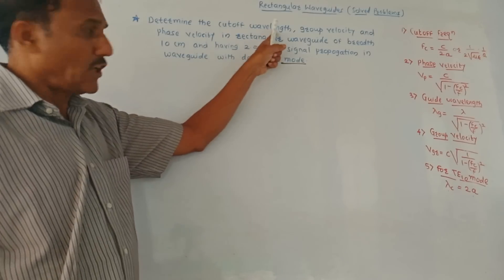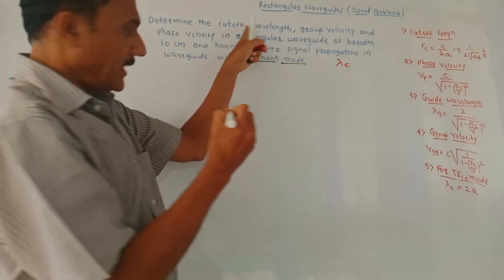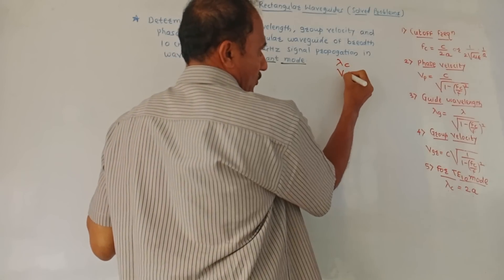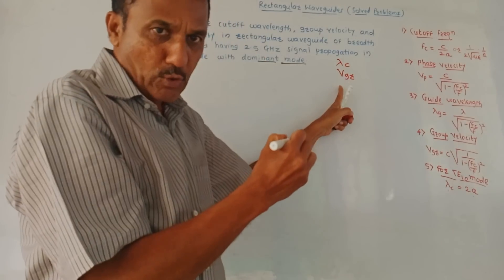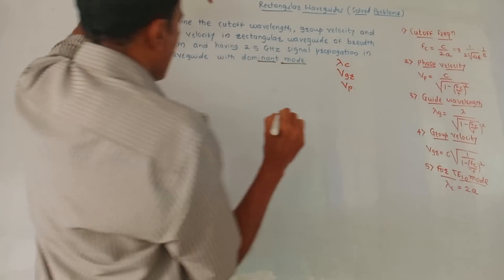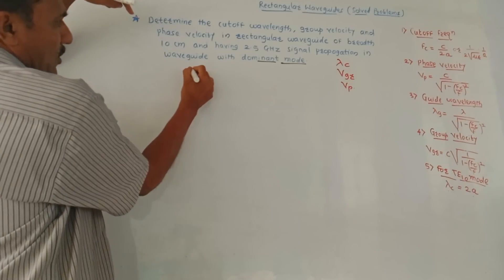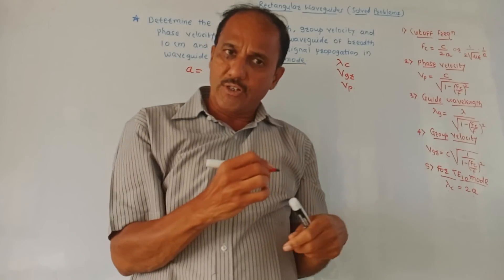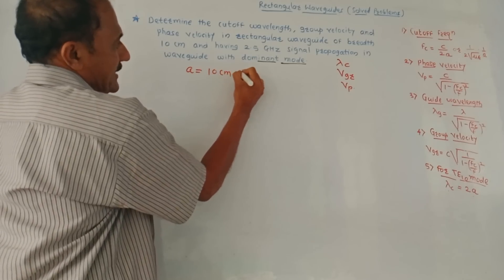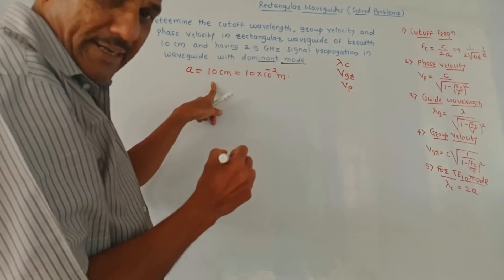The next numerical: determine the cutoff wavelength (notation lambda c), group velocity (vgr), and phase velocity (vp) in a rectangular waveguide of breadth 10 centimeters. Breadth of a rectangular waveguide is denoted by small a, so a is 10 centimeters, which is 10 × 10⁻² meters.